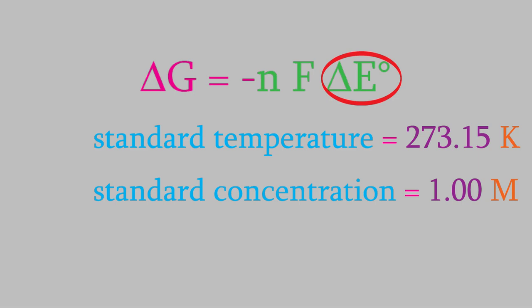But what if our voltaic cell uses some other temperature or concentration? In that case, we won't be able to use this equation after all. If we can predict the voltage of a voltaic cell at any temperature or concentration, we'll have a very useful tool, because we rarely do have exactly the right temperature or concentration in order to have standard conditions.